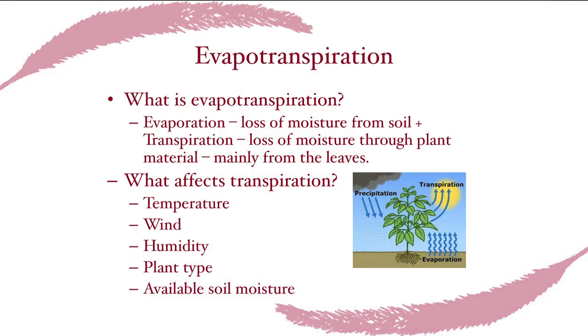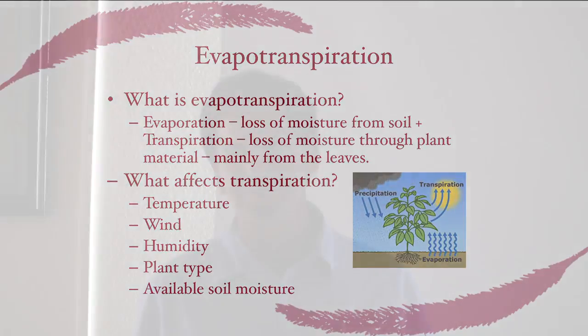Desert plants have leaves with hairs, smaller size, and lighter color so they don't heat up as much — a way to conserve moisture. Factors affecting transpiration include temperature, wind, humidity, plant type, and available soil moisture. In heavy clay soils there can be lots of water that the plant simply cannot access.